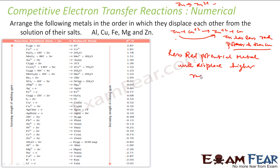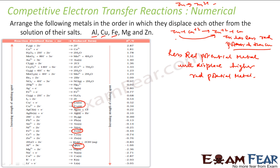The metal with less reduction potential will displace the one with higher reduction potential. So let's arrange them in order: we have magnesium, aluminium, copper, and iron. Magnesium is at this position, and zinc is also placed in this order on the reduction potential chart.